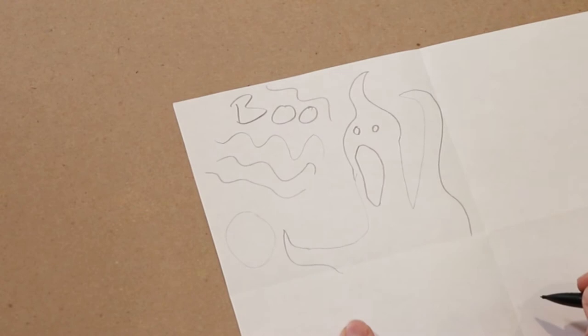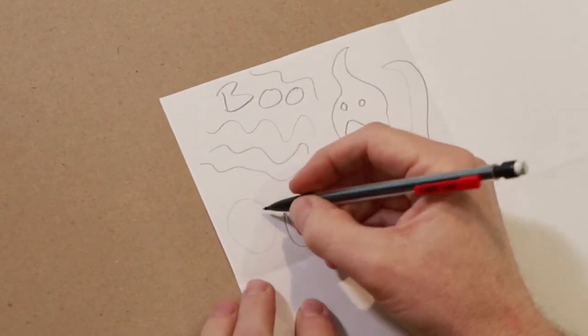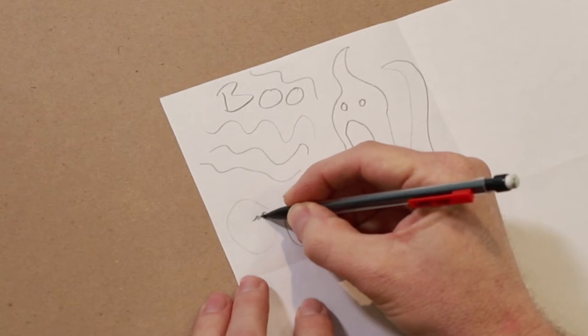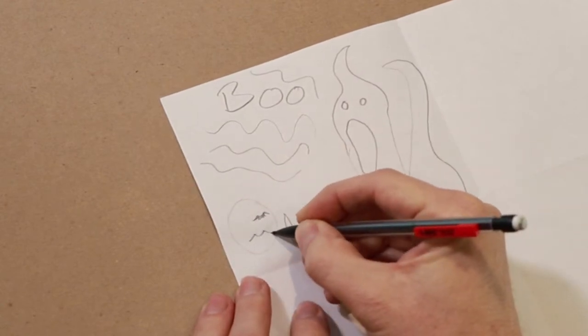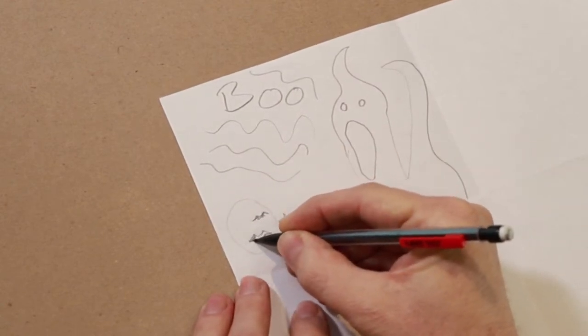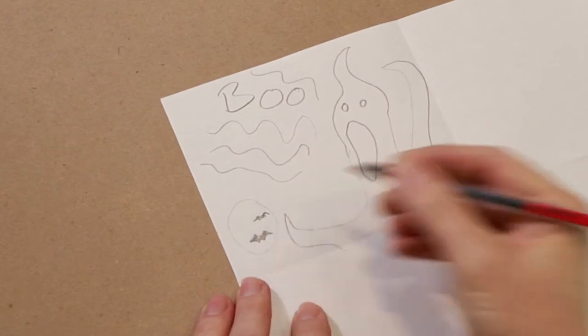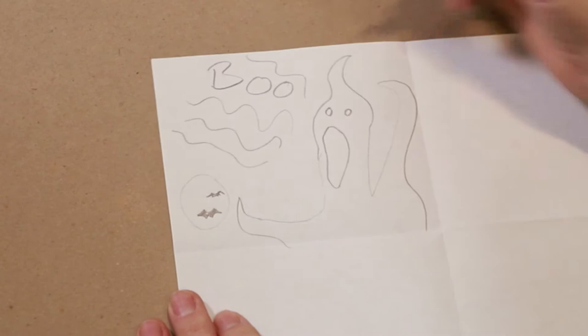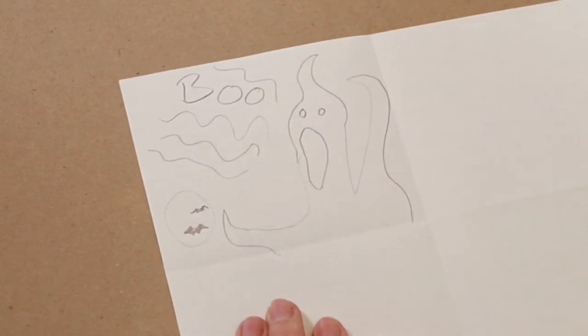There we go. And this is, this of course, is the moon. Maybe a couple of bats flying past the moon. There we go. There's some clouds. That's how I do clouds there.